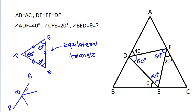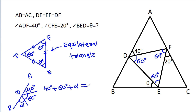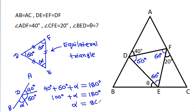We have points A, B, and D. This angle is 40 degrees, this angle is 60 degrees, and suppose the remaining angle is alpha. Then 40 degrees plus 60 degrees plus alpha equals 180 degrees. So 100 degrees plus alpha equals 180 degrees, therefore alpha equals 80 degrees. So this angle will be 80 degrees.